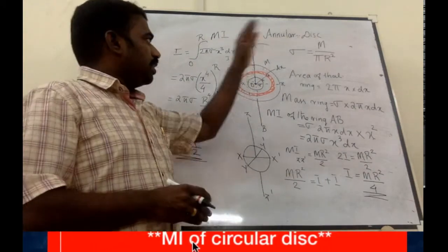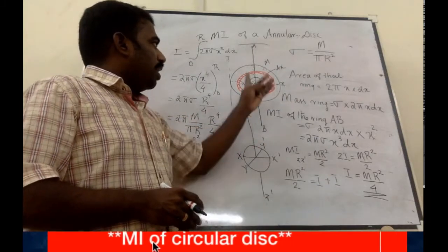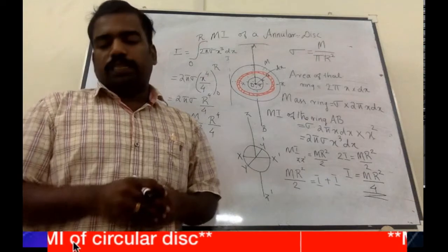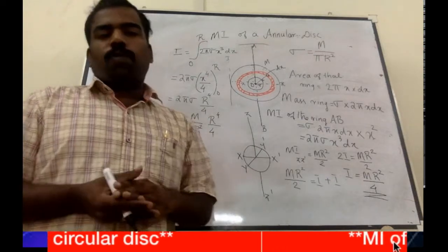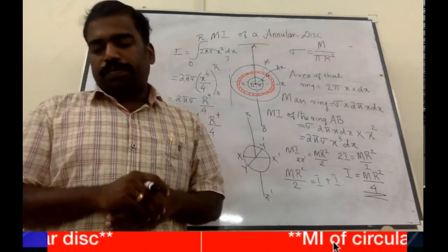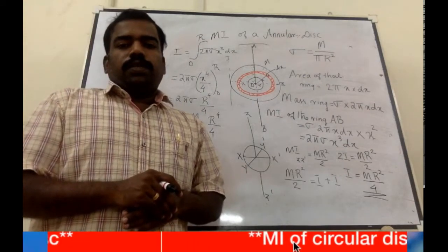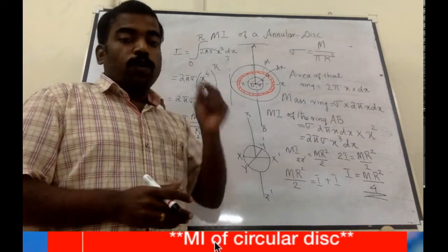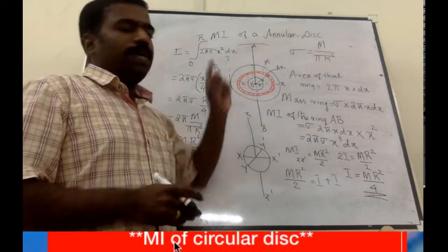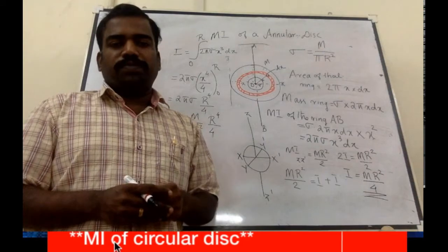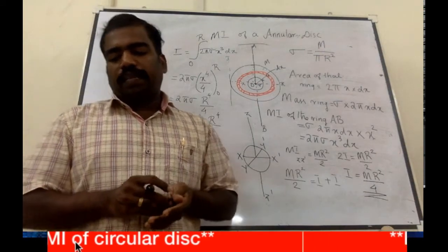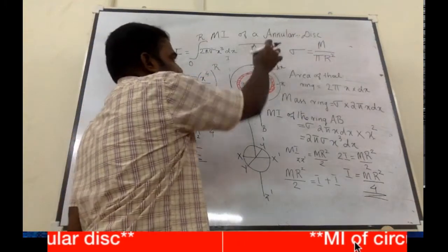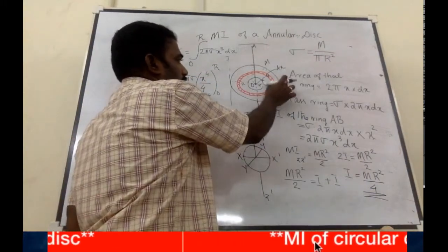So here we have a disc of outer radius capital R. A disk with a concentric hole is called an annular disk, or it is a disk from which a small coaxial disk is removed. We are considering an annular disk of mass capital M and outer radius capital R.